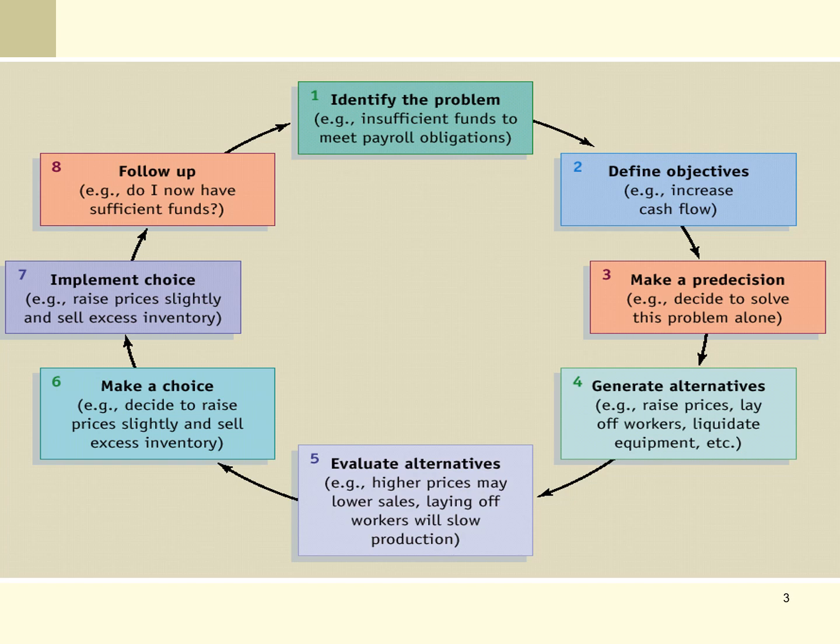We then need to generate alternatives — how can we actually achieve this objective? What are all the possible answers? Raising prices, laying off workers, liquidating equipment — what are our options? Once we have that list, we need to evaluate those alternatives. Higher prices may lower sales, which creates an unintended consequence — we raise prices and find sales reduce equally, leaving the same cash flow. Laying off workers may slow production. We need to think about the pros and cons of each.